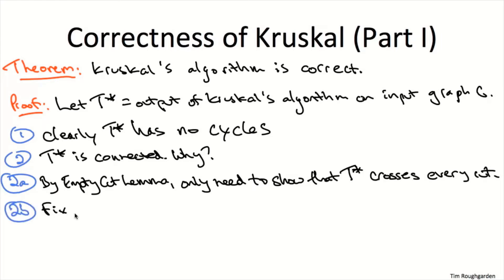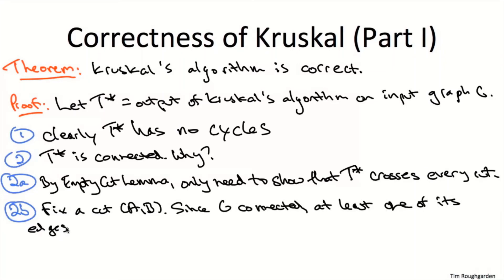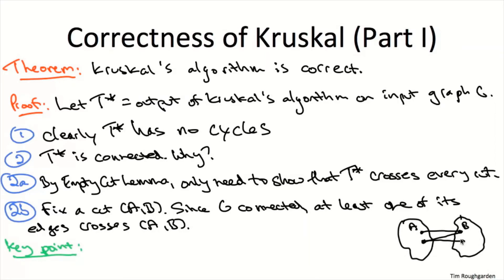To get started, let's fix an arbitrary cut A, B. Using the assumption that the input graph is connected, it certainly contains at least one edge that crosses this cut. Kruskal's algorithm makes a single scan through all of the edges — it considers every edge of the original input graph exactly once. So let's think about this cut A, B, which has at least one edge of G crossing it, and fast forward Kruskal's algorithm until the moment it first considers an edge crossing this cut A, B.